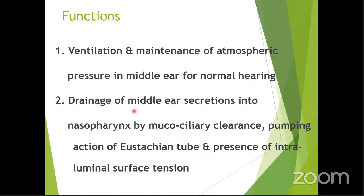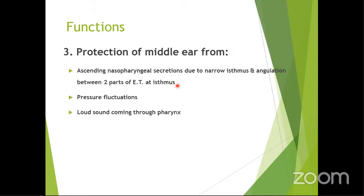The functions of the Eustachian tube include drainage of secretions from the middle ear to the nasopharynx, ventilation, and maintenance of pressure. This is why, during rapid changes in atmospheric pressure such as ascent or descent, the Eustachian tube can get locked, resulting in effusion.